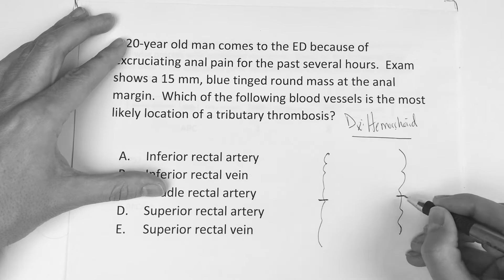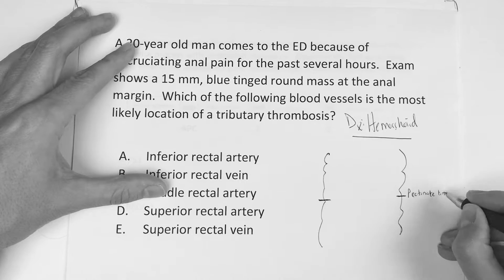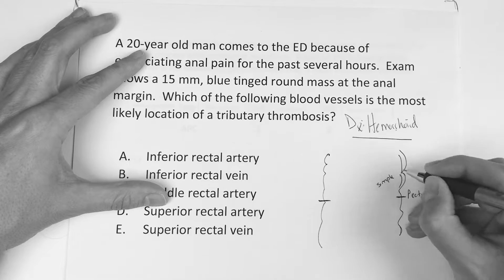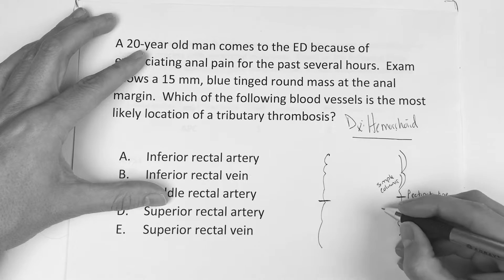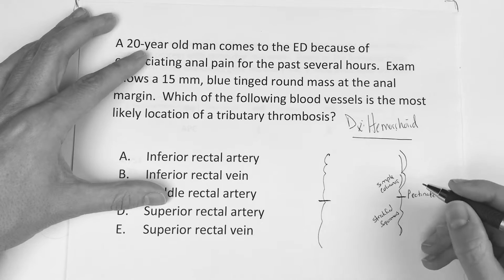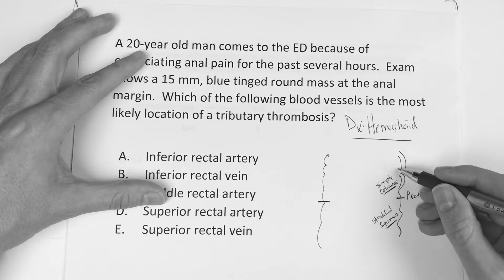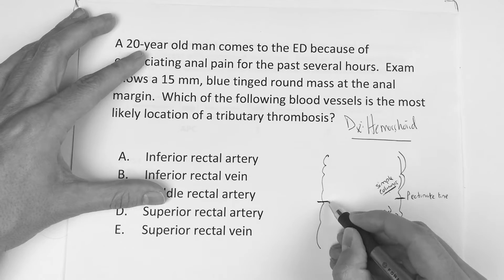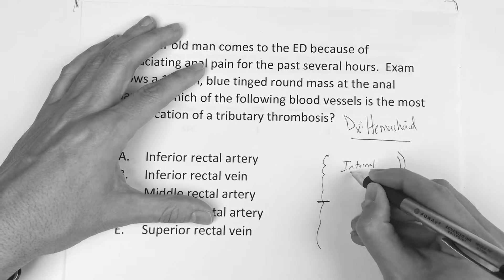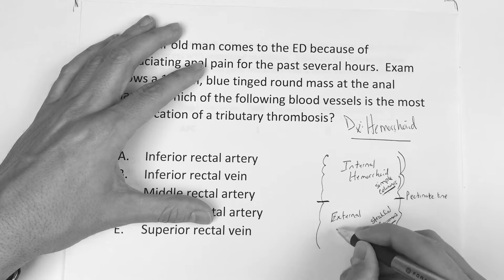So if we're down in the rectum area, there's a line called the pectinate line — it kind of separates things. The cells above it are simple columnar, and the cells below it are stratified squamous. I know you're thinking why does that matter — if I say it first, chances are you'll remember it. Simple columnar above, stratified squamous below. Now, if you have a hemorrhoid above the pectinate line, it's called an internal hemorrhoid. If you have a hemorrhoid below the pectinate line, it's an external hemorrhoid.